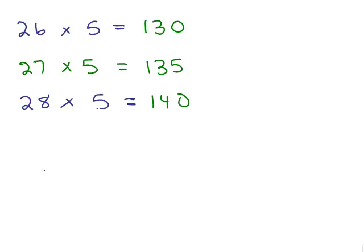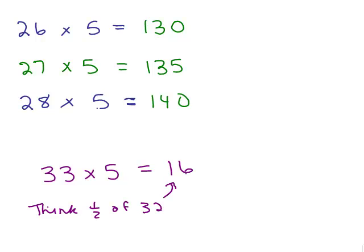So let's say I took 33 times 5. Well, it's easy to figure out 32 fives. So we'll take half of 32, all right, and then instead of just multiplying by 10, we're going to put a 5 at the end because it'll be, instead of 160, there's an extra 5 since it's an odd number.